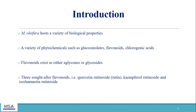Moringa oleifera is known as a miracle tree. This is mainly because it holds a variety of biological properties, and these properties are characteristic of the phytochemicals that it holds, which include glucosinolates, flavonoids, chlorogenic acids, and many more. For this talk, we will mostly focus on flavonoids, which exist as either aglycones or glycosides. Within the flavonoid group, flavonoids are able to undergo glycosylation from different sugars, meaning that the diversity of the flavonoids within Moringa oleifera is increased.